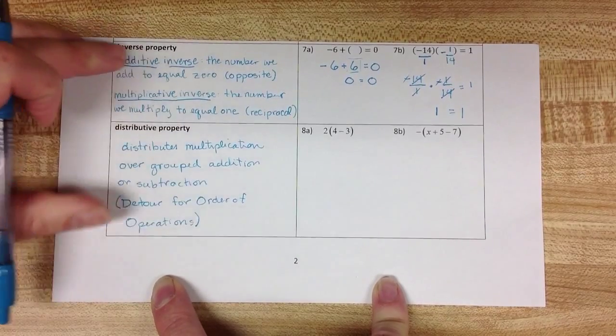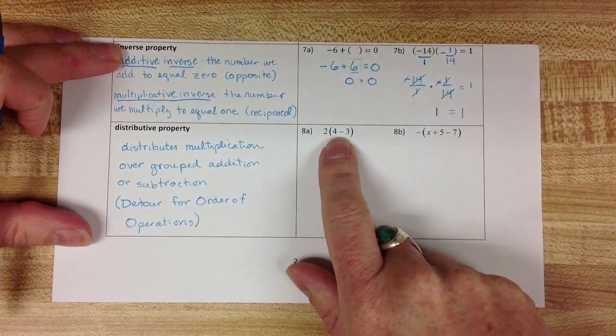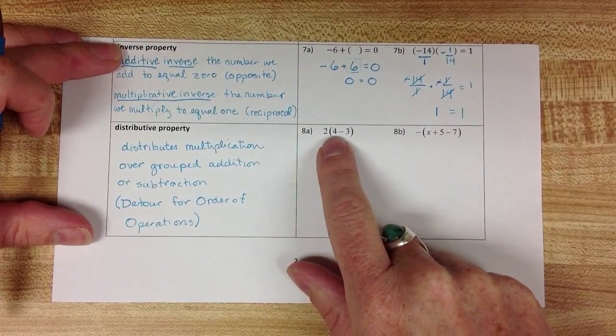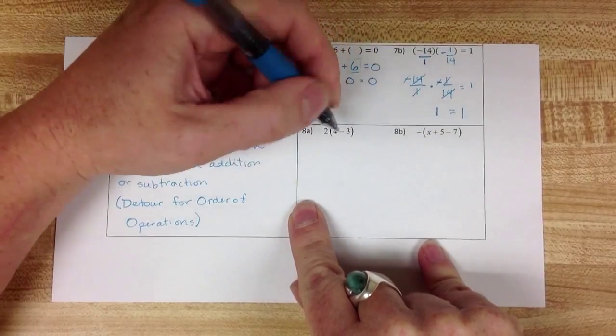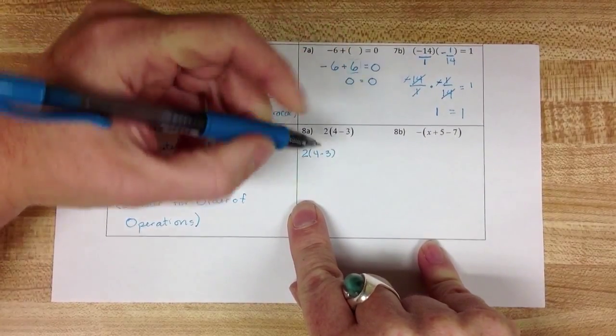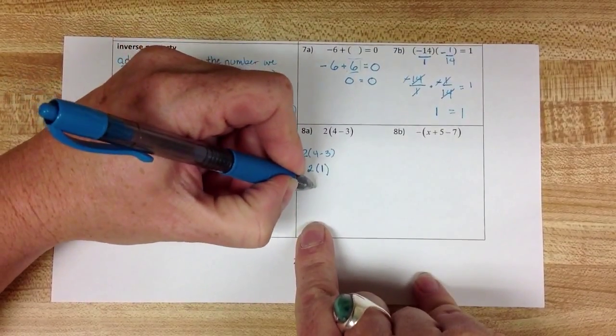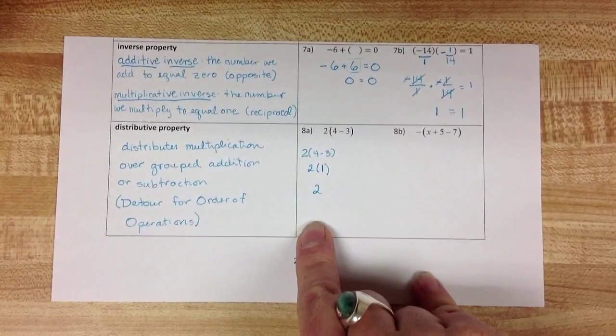Let me explain why that is. In this problem I could follow order of operations. I could do 4 minus 3 and get 1 and then take that 1 and multiply it by 2 to get a final answer of 2.